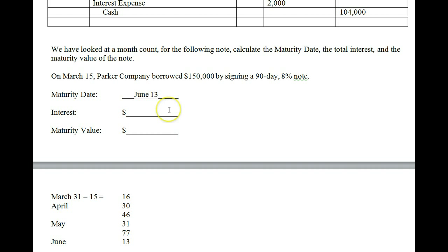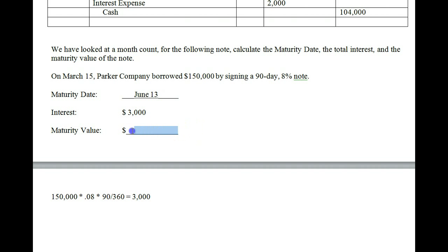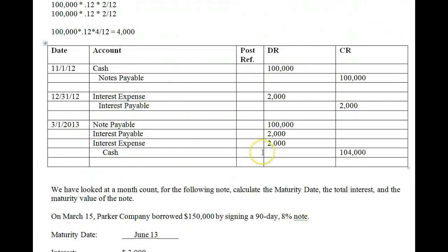Now for the interest: principal times rate times time. The principal is $150,000, the rate is 8%, and time is 90 days out of 360. That gives us $3,000 total interest. The maturity value is the principal plus interest: $150,000 plus $3,000 equals $153,000. That concludes our lecture on notes. We'll see you next time.